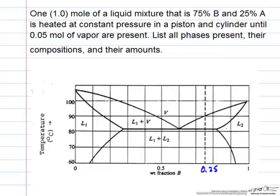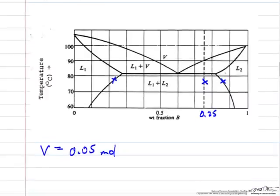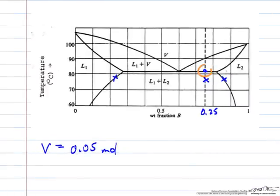The whole diagram is at constant pressure, so we start here for example. This point corresponds to this composition in one liquid phase in equilibrium with this other liquid phase. As we increase the temperature, we get to this point.